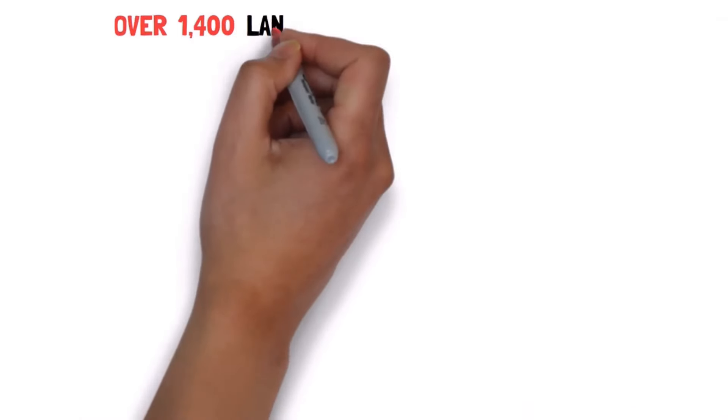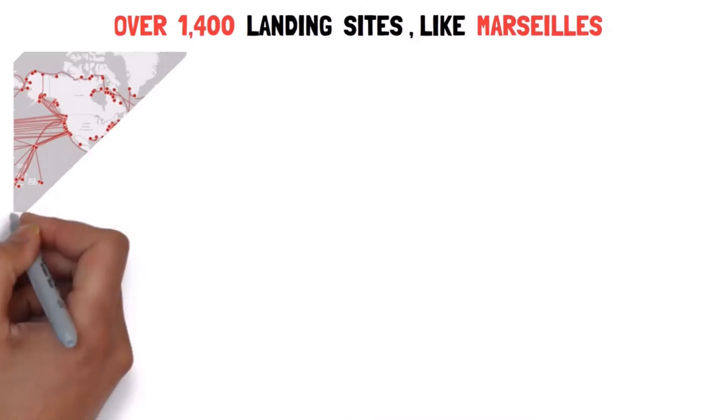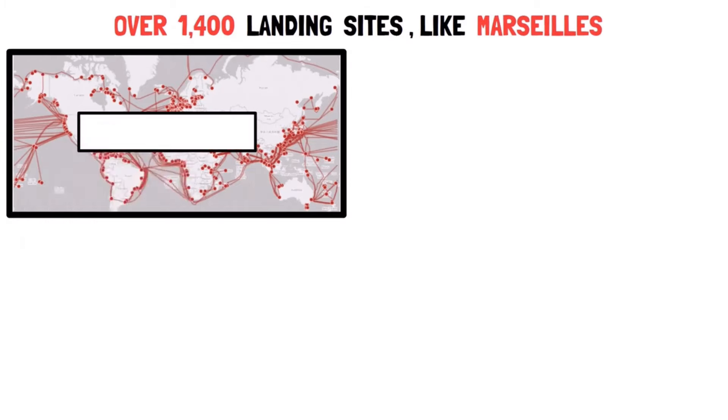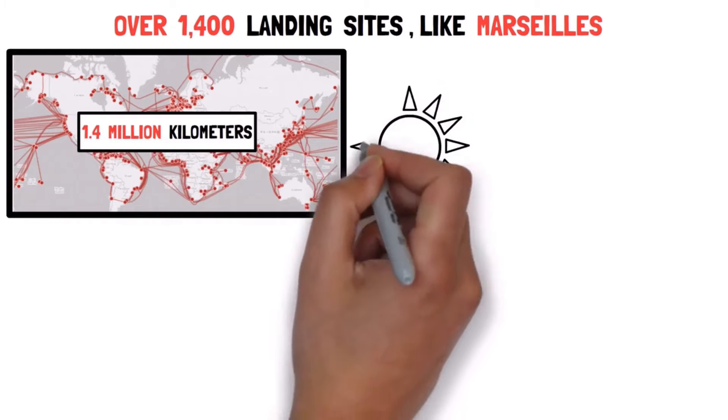Worldwide, there are over 1,400 landing sites like Marseille, connecting some 500 active and planned cables. In total, the global network spans 1.4 million kilometres, roughly the sun's diameter.